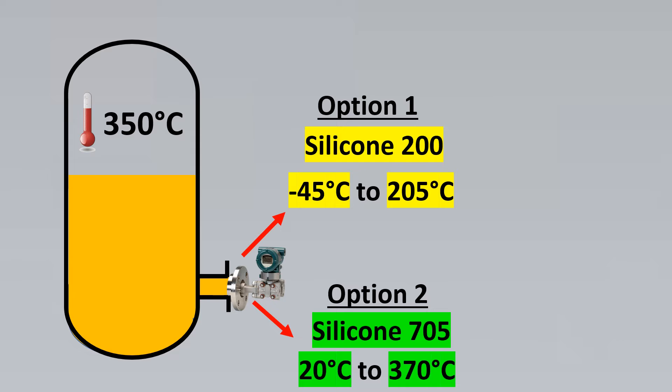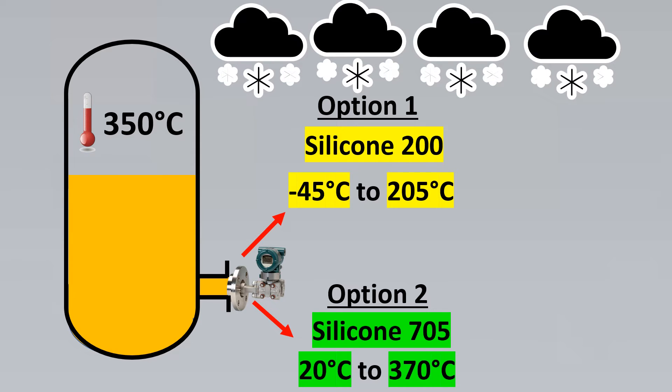However, there was something strange which happened. The ambient conditions were too low. That is it was minus 20 degrees Celsius which is way below the Silicon 705 range. So it can only support up till 20 degrees Celsius and ours was minus 20 degrees Celsius. So a difference of 40 degrees.